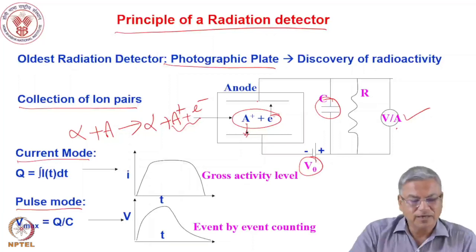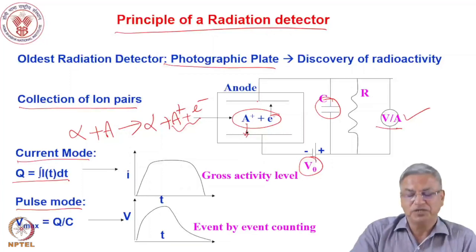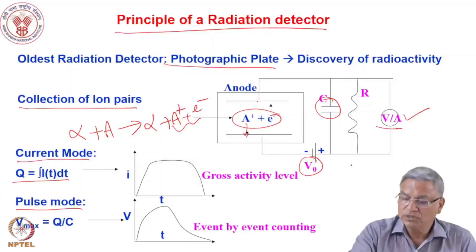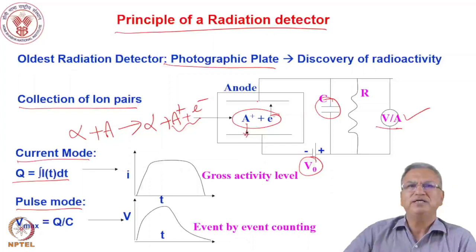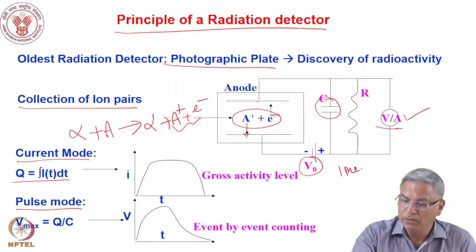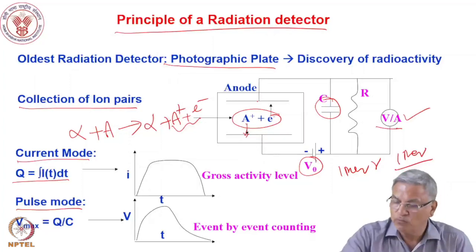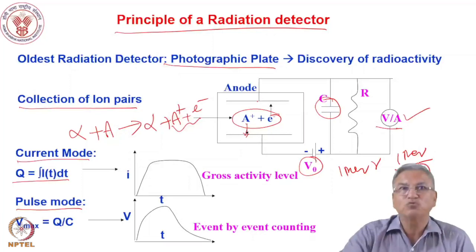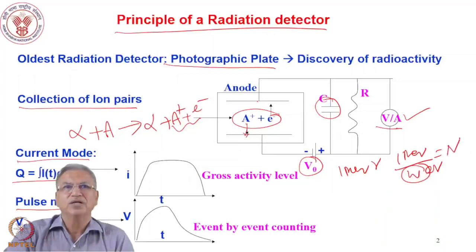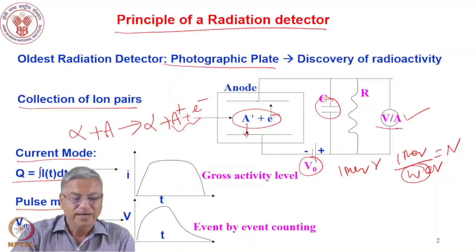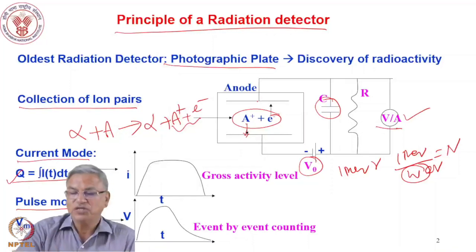When you measure the current in the circuit, whatever charge was created by the interaction of radiation with matter is the total charge. Suppose you have 1 MeV gamma rays coming in — it will produce ion pairs equal to E divided by W, where W is the energy required to produce one ion pair. These ion pairs are collected, so you are essentially collecting the charge. When this charge discharges through the ammeter, you see the current flowing in the circuit — it will be rising, become flat, and come down.